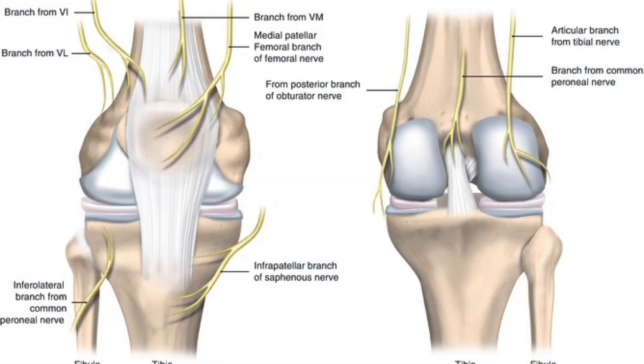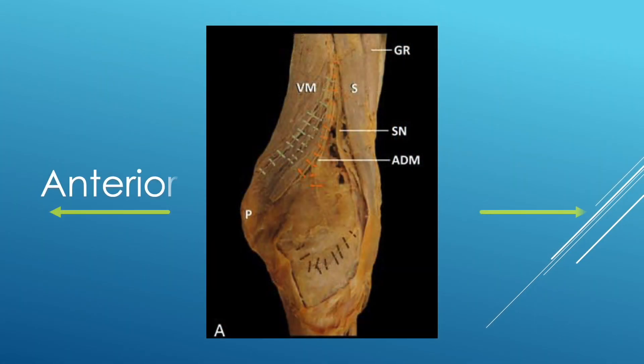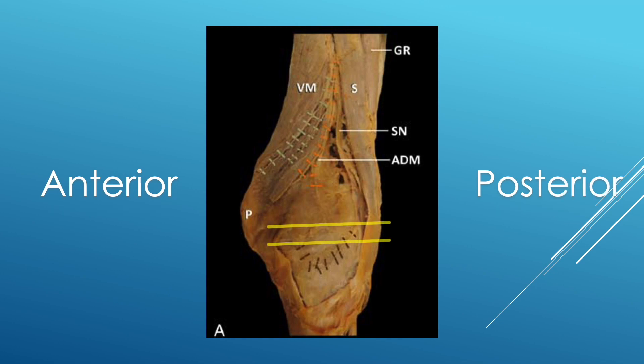Let me review more details. This is the medial view of the distal thigh and knee, showing the joint line.